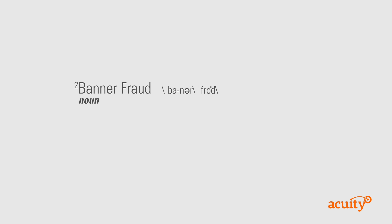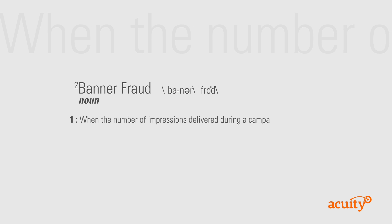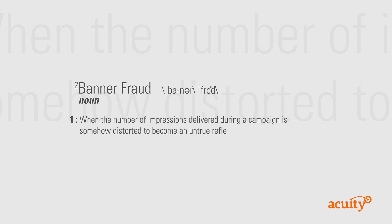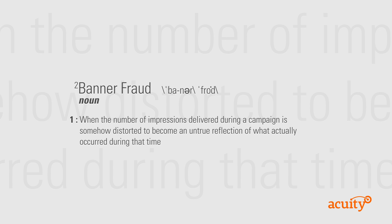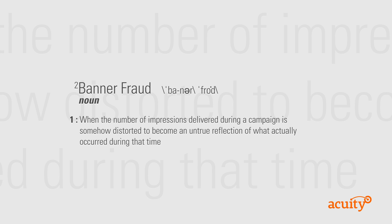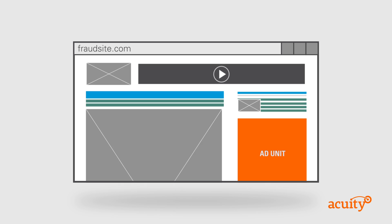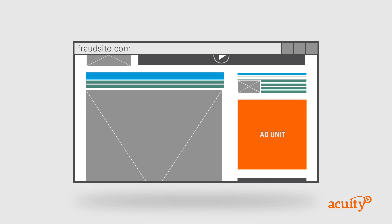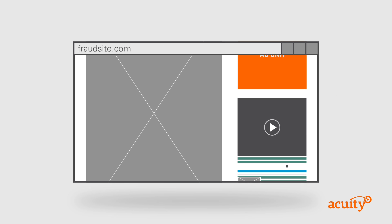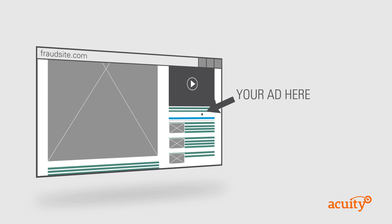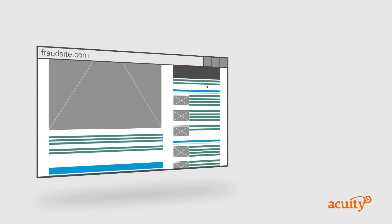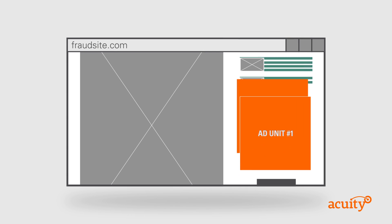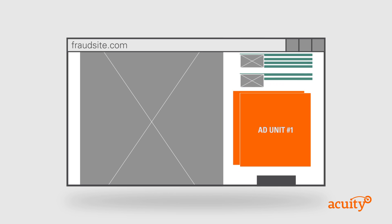Banner fraud. Banner fraud occurs when the number of impressions delivered during a campaign is somehow distorted to become an untrue reflection of what actually occurred during that time. This type of fraud can come in a couple of different forms. Banner ads can be placed within a one-by-one pixel or positioned on a page in a manner which makes them invisible to human users. Impressions can also be layered behind other ads, artificially inflating the number of impressions shown at one time.